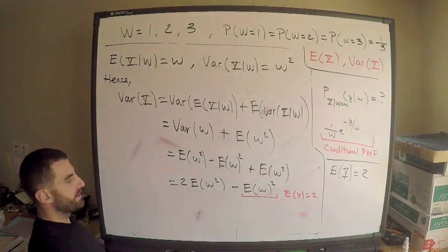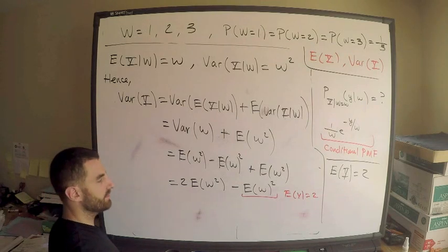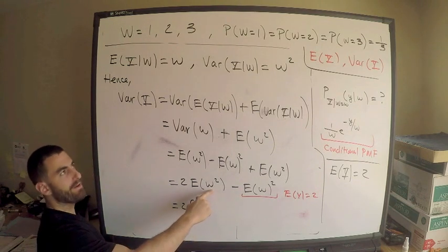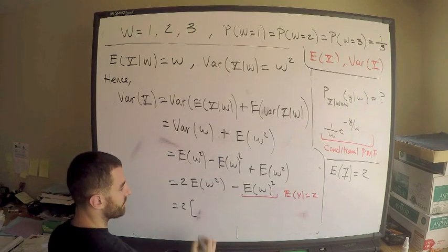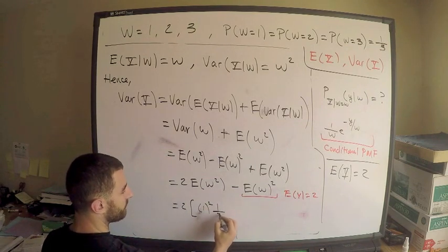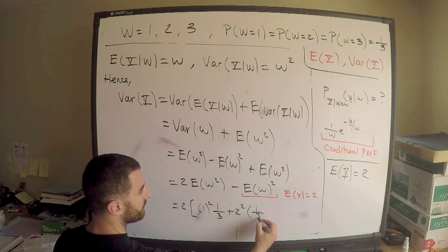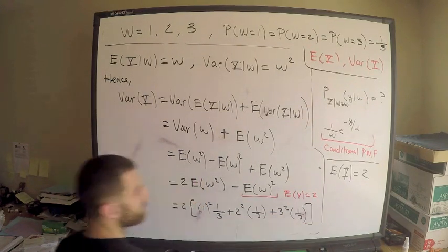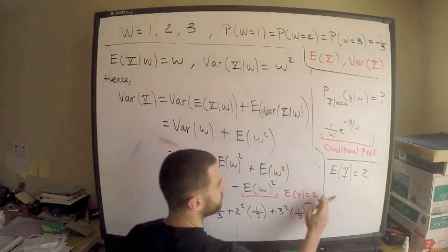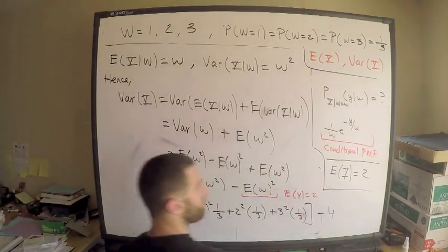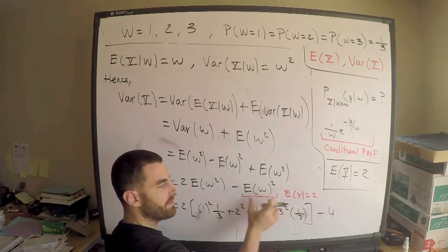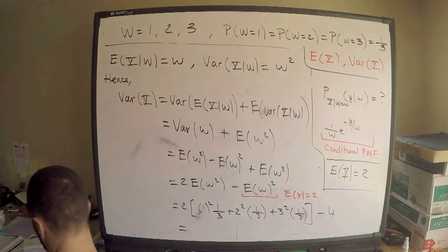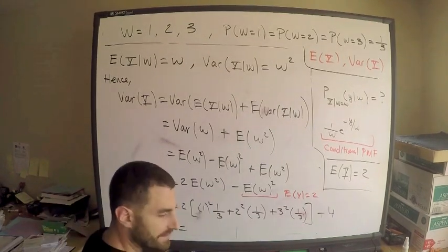We just need E[W²]. Going back to basics, you square the values of W and multiply by their probabilities: one squared times one-third, plus two squared times one-third, plus three squared times one-third. That's (1 + 4 + 9) over 3 = 14/3. So Var(Y) = 2 times (14/3) minus 4 = 28/3 minus 12/3 = 16/3.